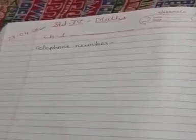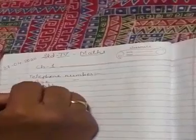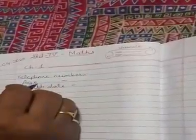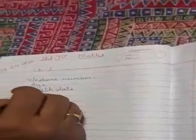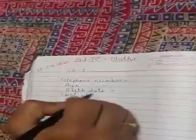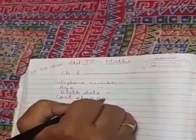First thing, I want any one of you to stand up and give me telephone number. Then I need an age, birth date. Along with this, I want to know the cost of your pen which you are using.